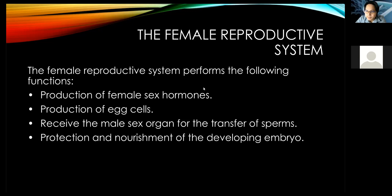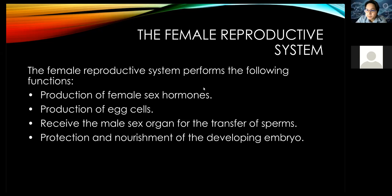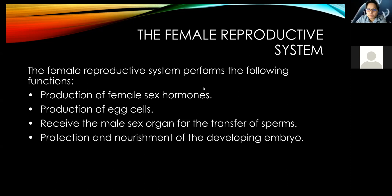Number two: production of egg cells, in the ovary. Females have two ovaries — the left and the right. The production of egg cells is one at a time, one egg cell per month.